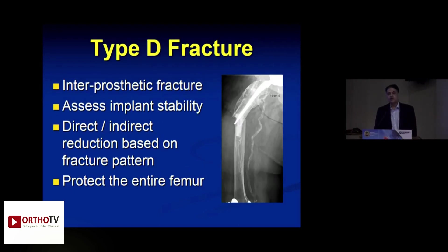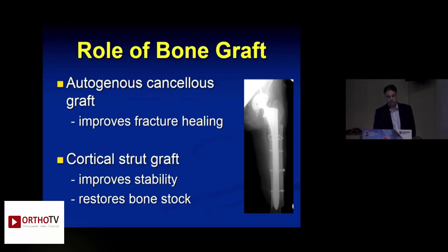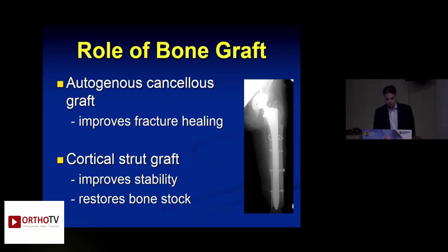Interprosthetic fractures — where both hip and knee have been replaced — are being seen more frequently. The same principles apply: if implants are stable, use a long enough plate covering the entire length of the femur with well-spaced screws. Bone grafts are useful, especially cortical strut grafts, which improve construct stability and also restore bone stock.